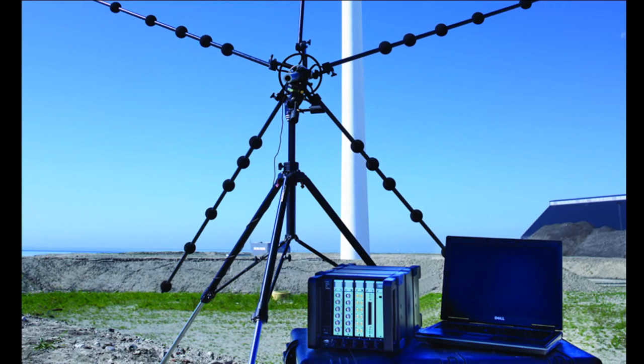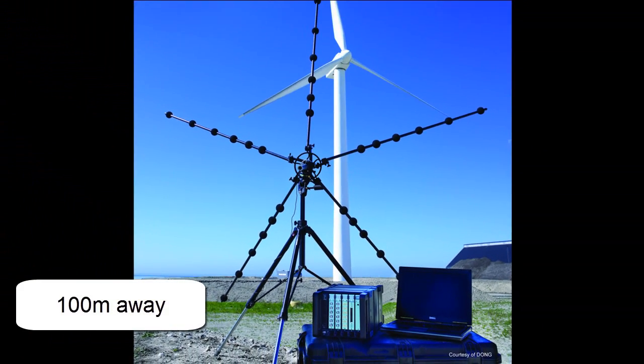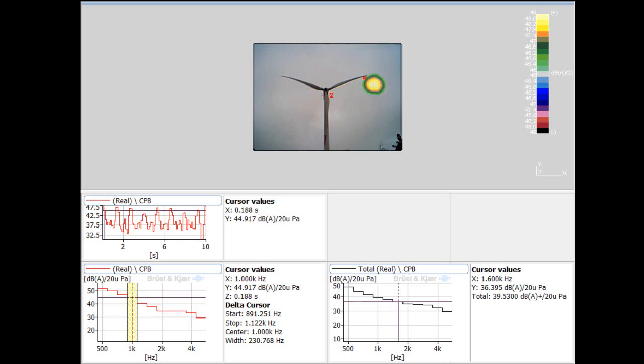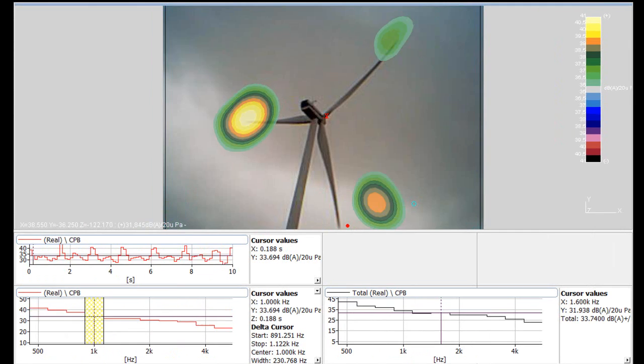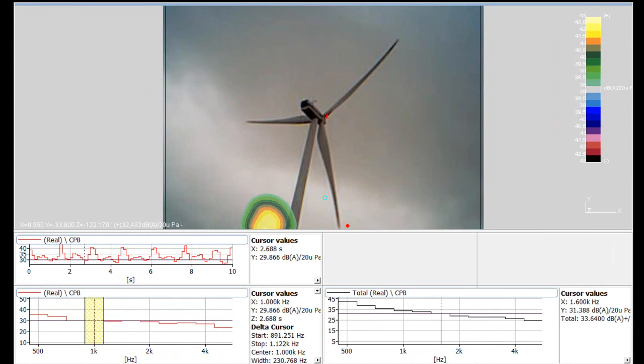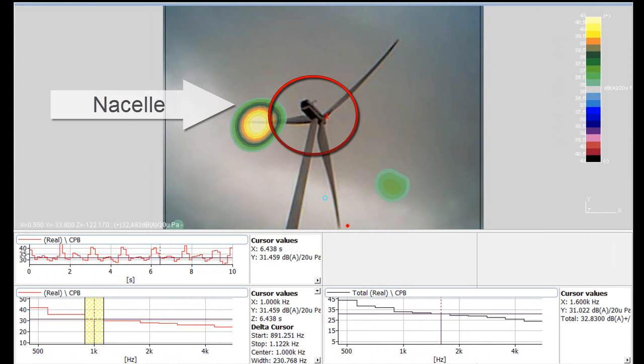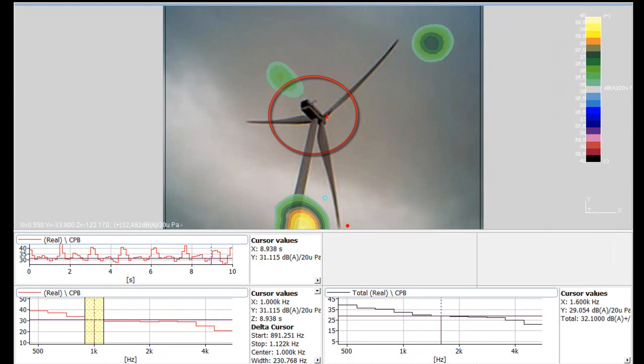Here we see a portable pentangular array system at about 100 meters from a wind turbine. The results of a beamforming measurement show that most of the noise is generated from the blade tips during the downward sweep. Very little noise is generated from the nacelle on this particular turbine.